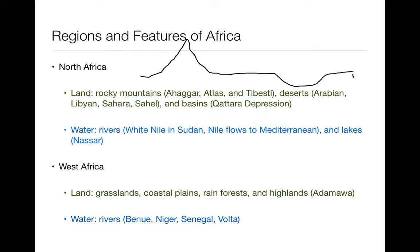To the west, you'll see that it's mainly grasslands, coastal plains, rainforests, and highlands. Not so many mountains, not a lot of desert, but you'll see kind of this African savanna-type land — when you see a picture of Africa with lions roaming in the prairie, this is what we always picture Africa as. This is more in the west of Africa. They also have the Manu, the Niger, the Senegal, and the Volta Rivers in this area.